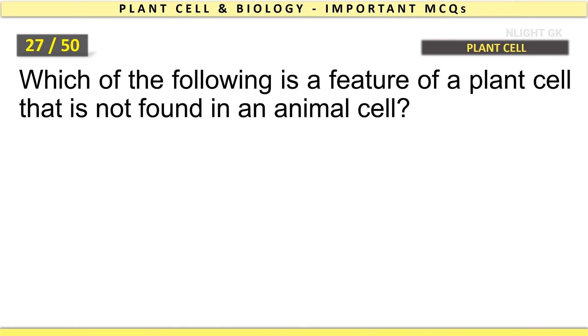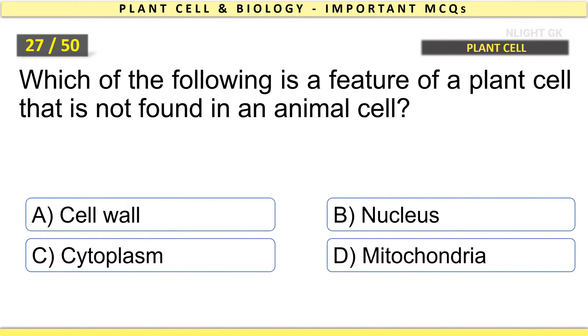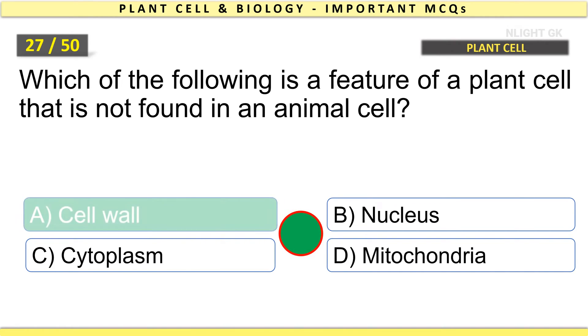Which of the following is a feature of a plant cell that is not found in an animal cell? Cell wall.